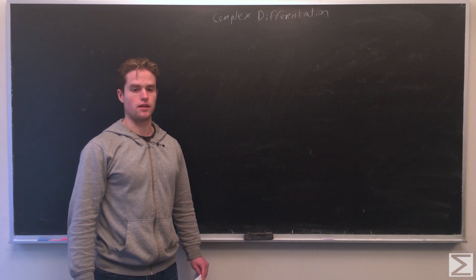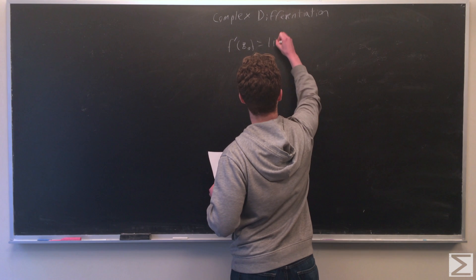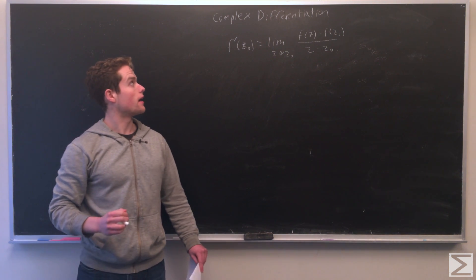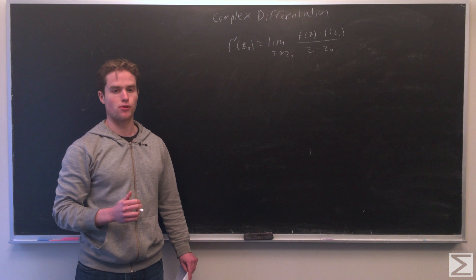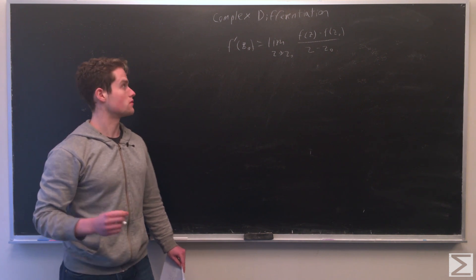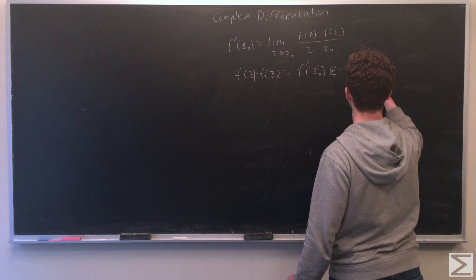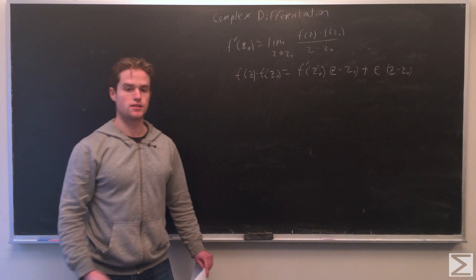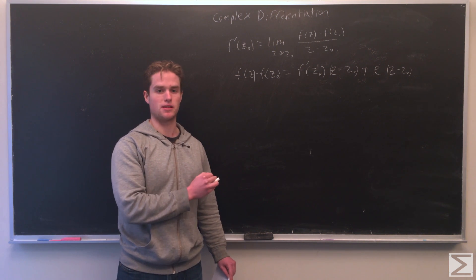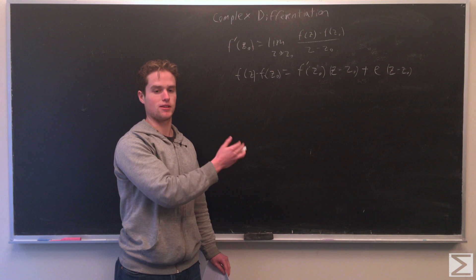We can define the derivative of our function of a complex variable as: the derivative of f at z0 is equal to the limit as z approaches z0 of f(z) minus f(z0) over z minus z0. This is also equivalent to saying f(z) minus f(z0) equals f prime of z0 times (z minus z0) plus epsilon times (z minus z0), given that epsilon goes to 0 as the magnitude of z minus z0 goes to 0.